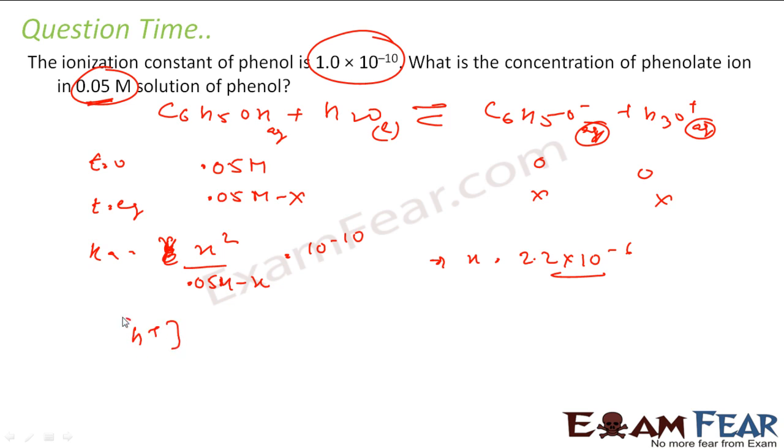So if you solve this you get x to be 2.2 into 10 to the power minus 6. Thus I can say that my H plus ion concentration is 2.2 into 10 to the power minus 6, and my C6H5O minus concentration is also 2.2 into 10 to the power minus 6, and that is my answer. Easy one.